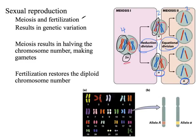At fertilization, as we said before, this is going to restore the diploid number. So if we have egg and sperm that are produced, and each one is haploid, if those come together in fertilization, then we restore that diploid number.